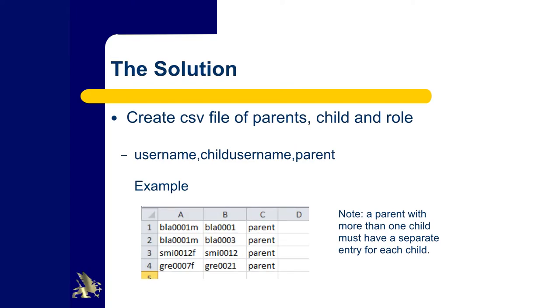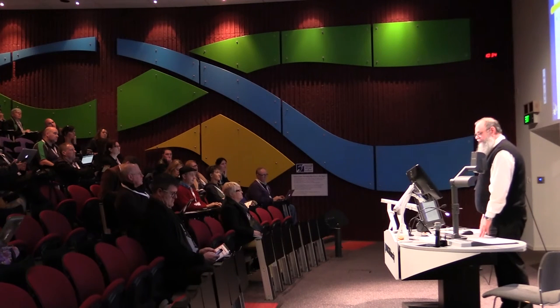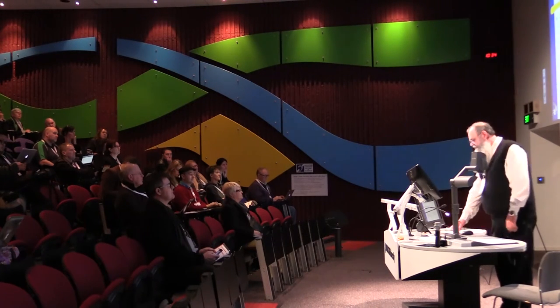You then need to create a CSV file of parent, child, and the role — which in this case is 'parent'. You need to make sure that each parent with multiple children has an entry for each individual child. So if there are two children there need to be two entries. We grabbed that data from CASES 21 and manipulated it in Excel.